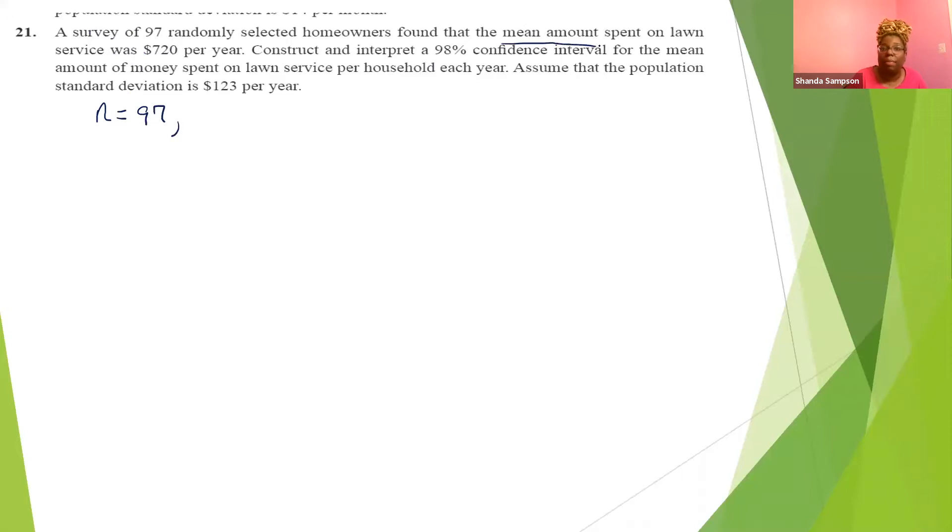Found that the mean amount spent on lawn services was $720 per year. So the mean of this sample is 720. Construct and interpret a 98% confidence interval for the mean amount of money spent on lawn services per household. Assume that the population standard deviation is $123. We should already know what we're going to round our final answer to because we're given x bar. So we can't be more precise than what's listed.